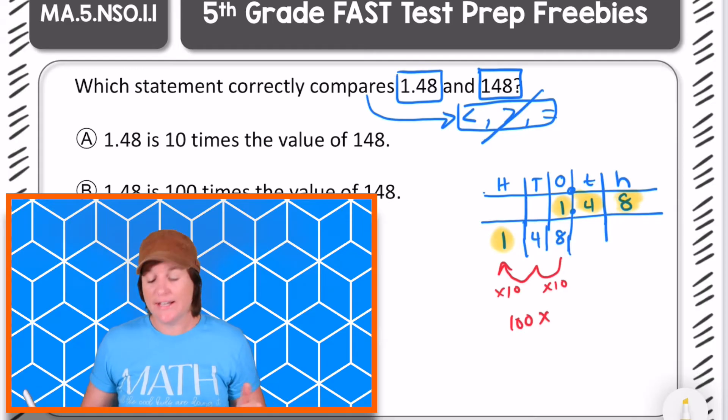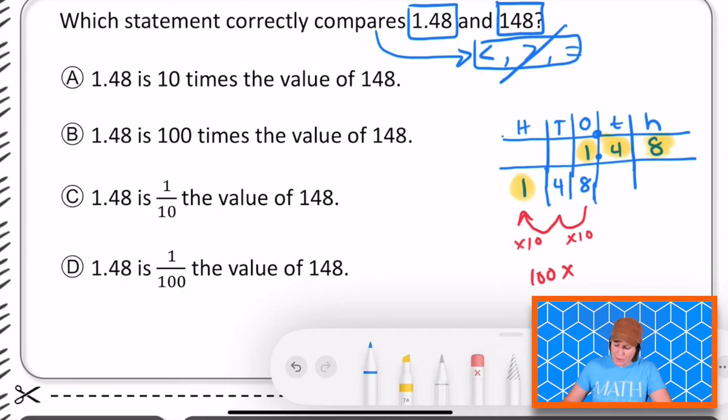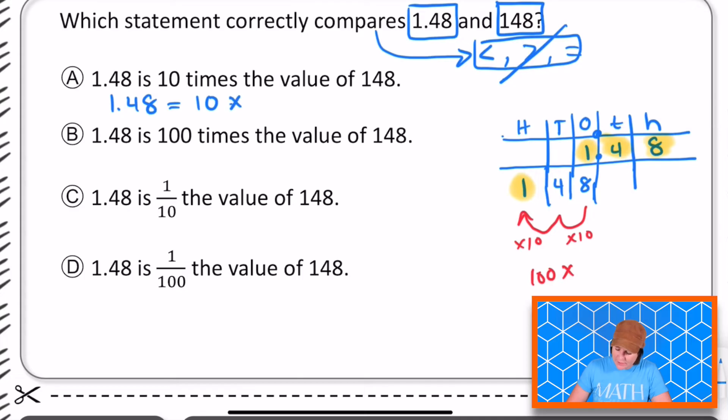So let's go in and look at each answer choice. So here I see that 1.48 is, which means is equal to, 10 times the value of 148. Well, if I do this right here, 10 times 148, I know that's going to make 148 greater. 1480. That is not equal to 1.48. So that one is not correct.